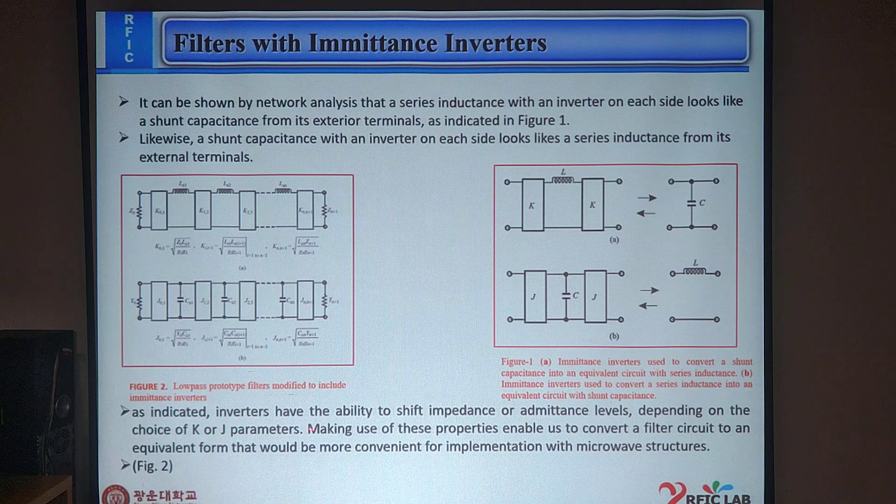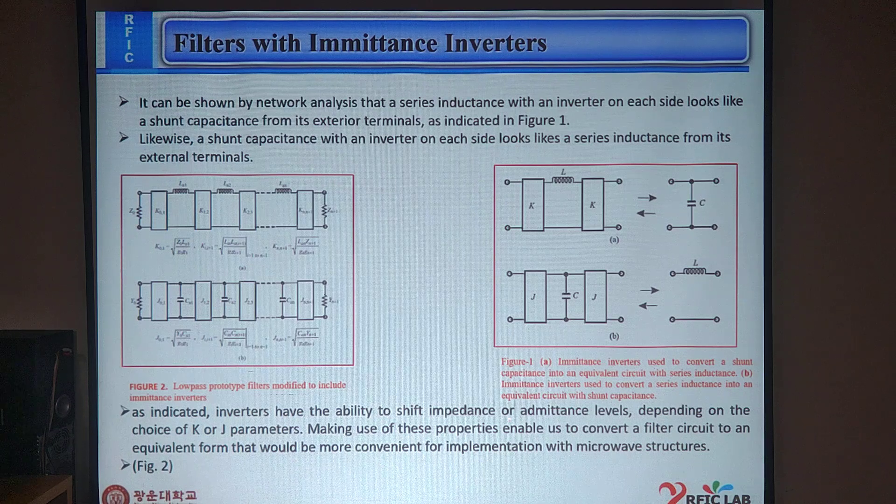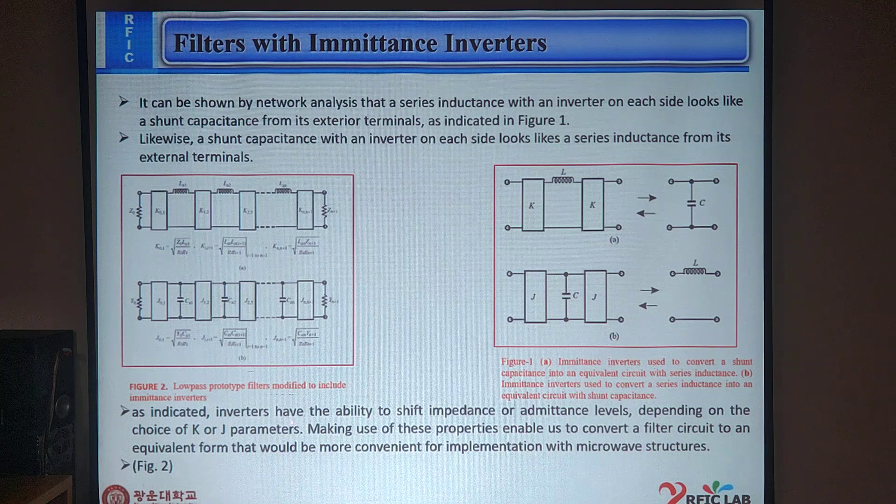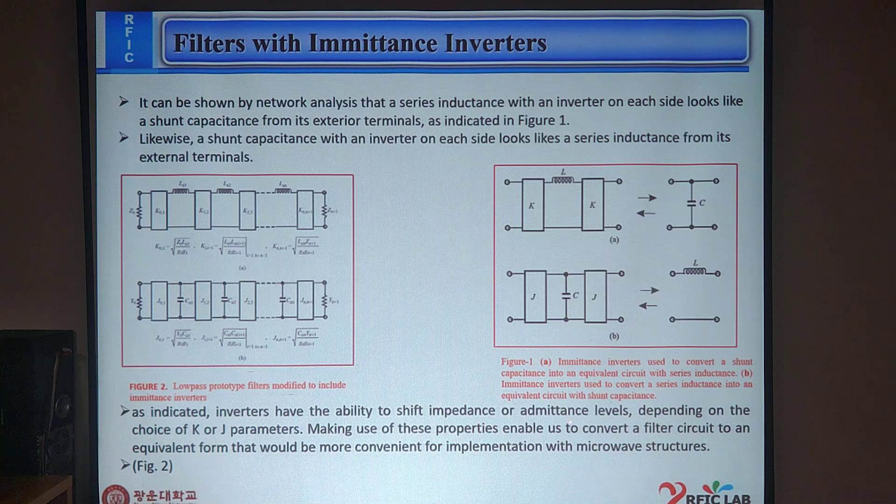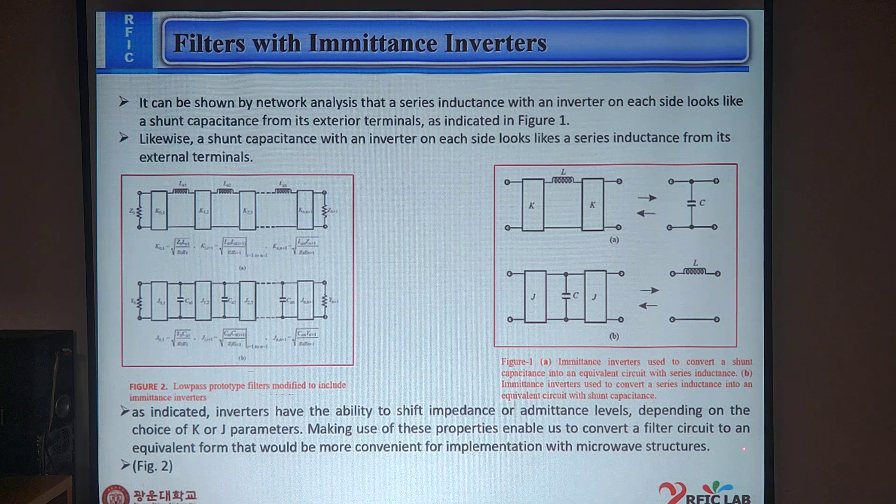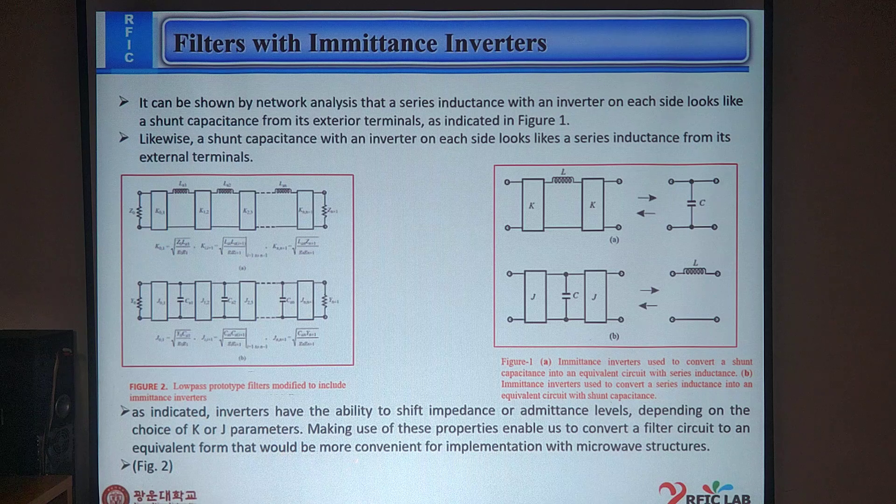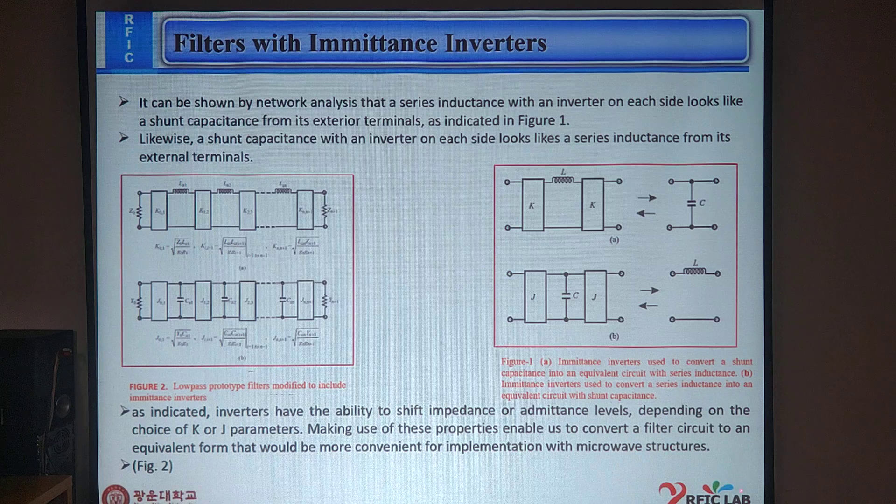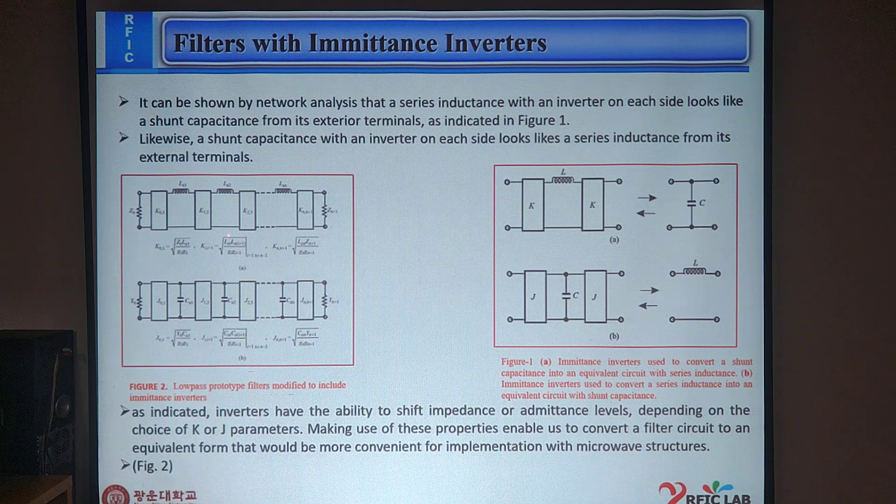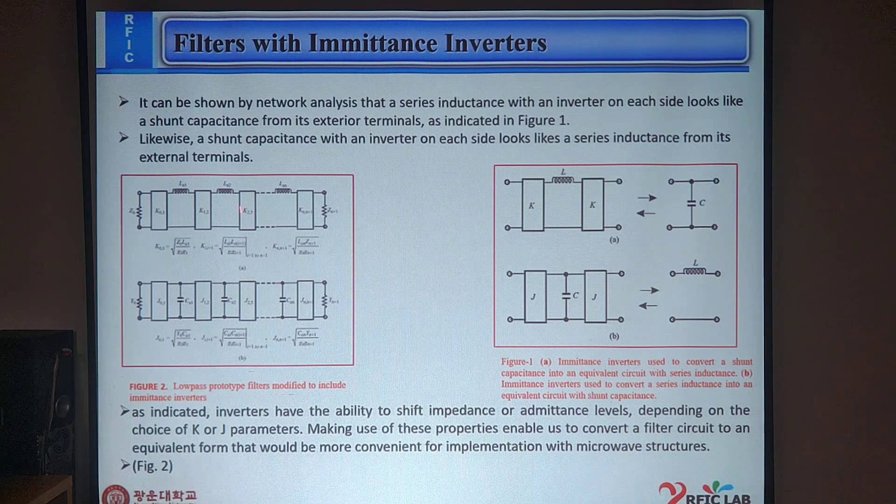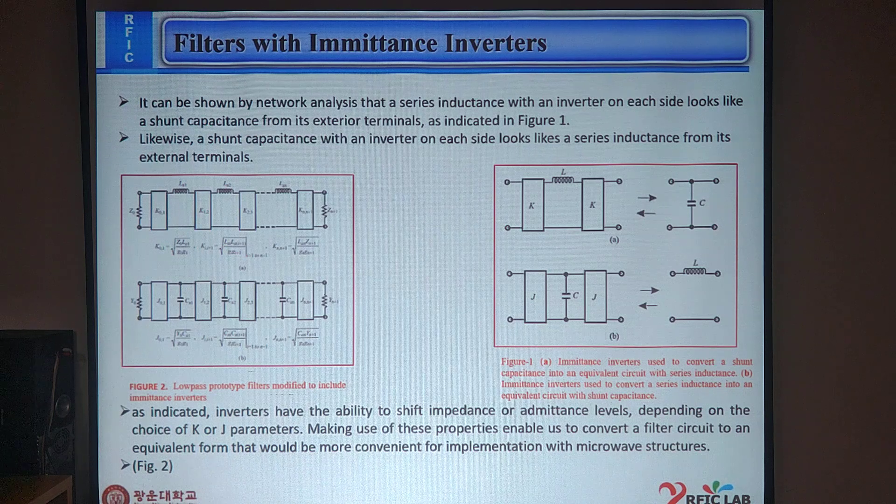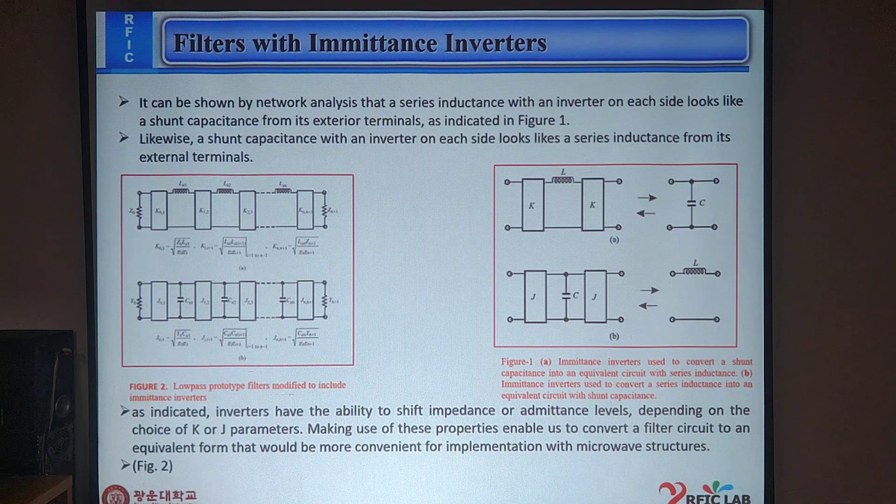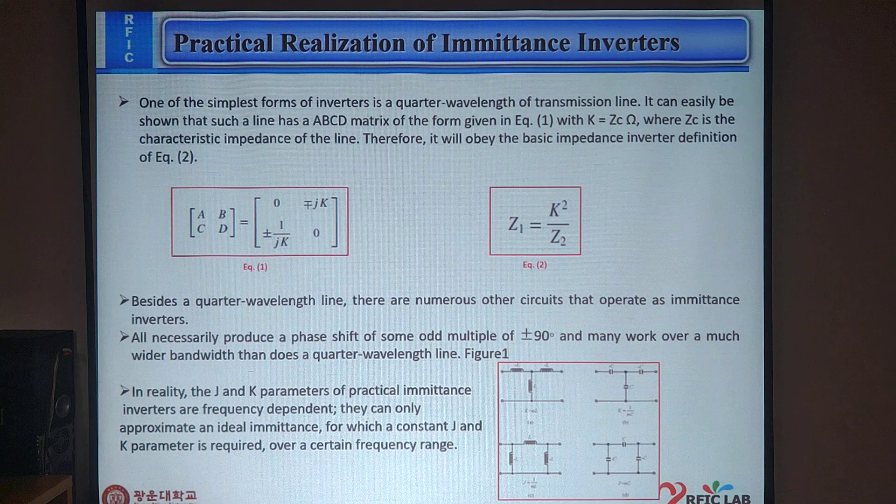In Figure B, imittance inverter used to convert a series inductance into an equivalent circuit with shunt capacitance. As indicated, inverters have the ability to shift impedance or admittance level depending on the choice of K or J parameter. Making use of these properties enables us to convert a filter circuit to an equivalent form that would be more convenient from implementation into microwave structure. As we can see in Figure 2, low-pass prototype filters modified to include imittance inverter.